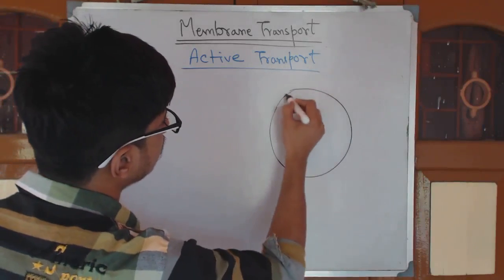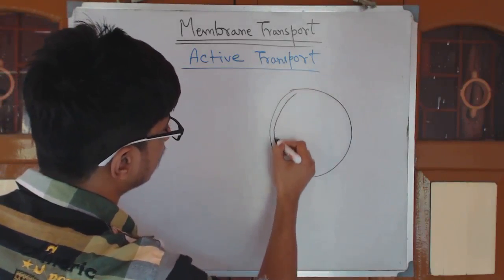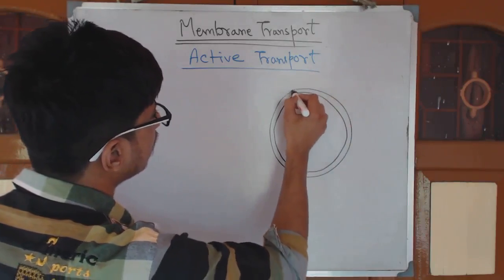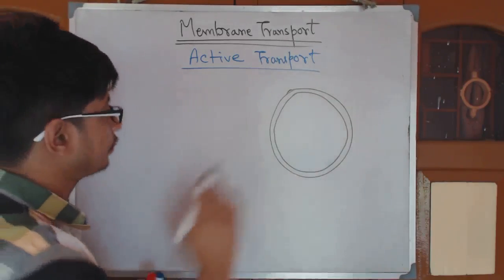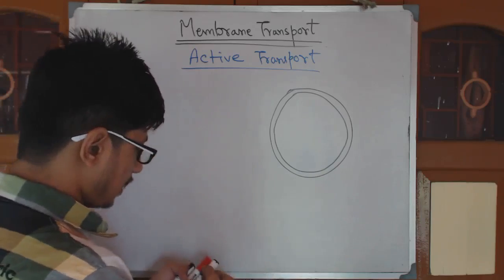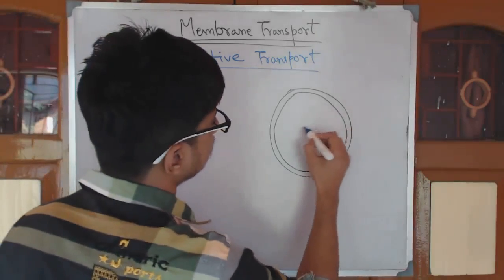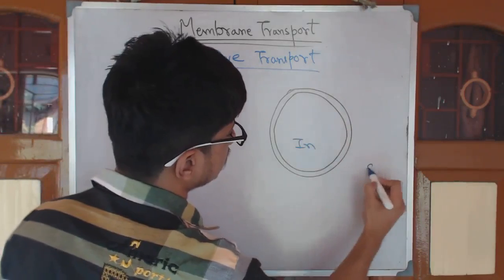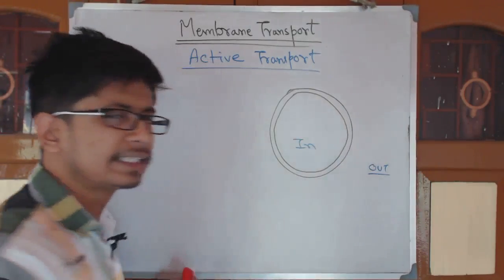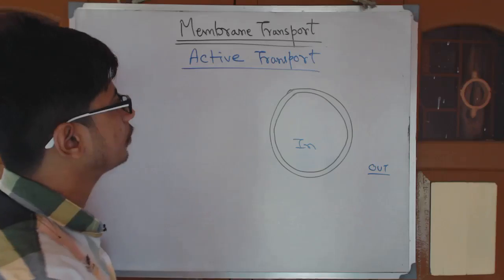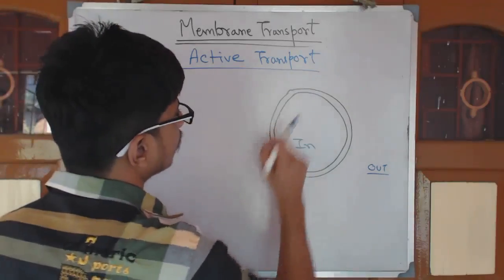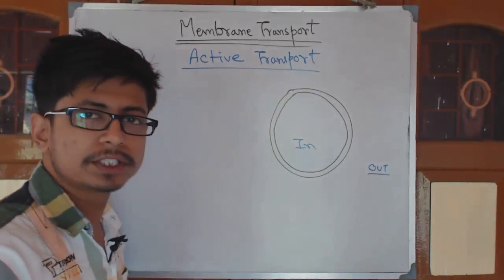If I draw a cell — the lipid bilayer — this is a cross-section view of the cell. Active transport means the molecule, for example, the inside versus the outside. The example for active transport I can give you is sodium-potassium transport.